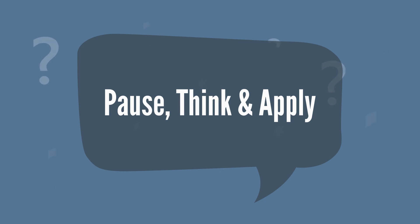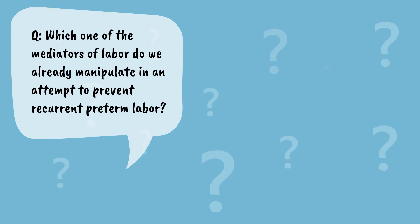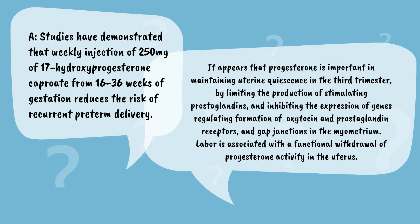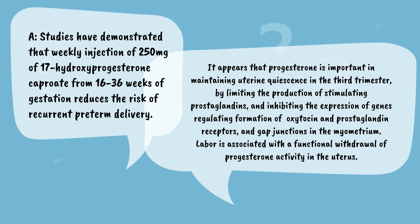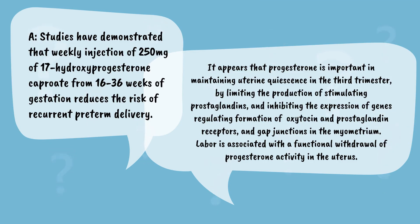Let's pause, think, and apply. Which one of these mediators of labor do we already manipulate in an attempt to prevent recurrent preterm labor? Studies have demonstrated that weekly injection of 250 mg of 17-hydroxyprogesterone caproate from 16 to 36 weeks of gestation reduces the risk of recurrent preterm delivery. It appears that progesterone is important in maintaining uterine quiescence in the third trimester by limiting the production of stimulating prostaglandins and inhibiting the expression of genes regulating formation of oxytocin and prostaglandin receptors and gap junctions in the myometrium. Labor is associated with a functional withdrawal of progesterone activity in the uterus.